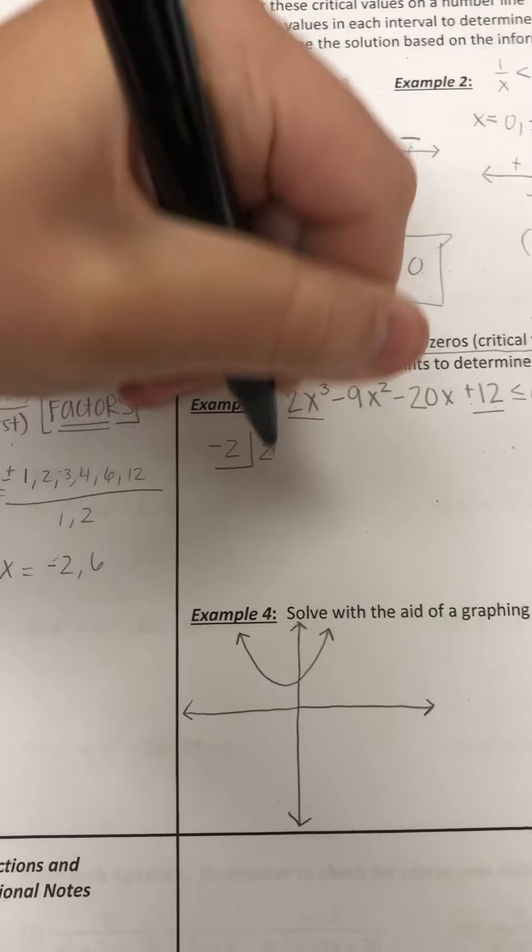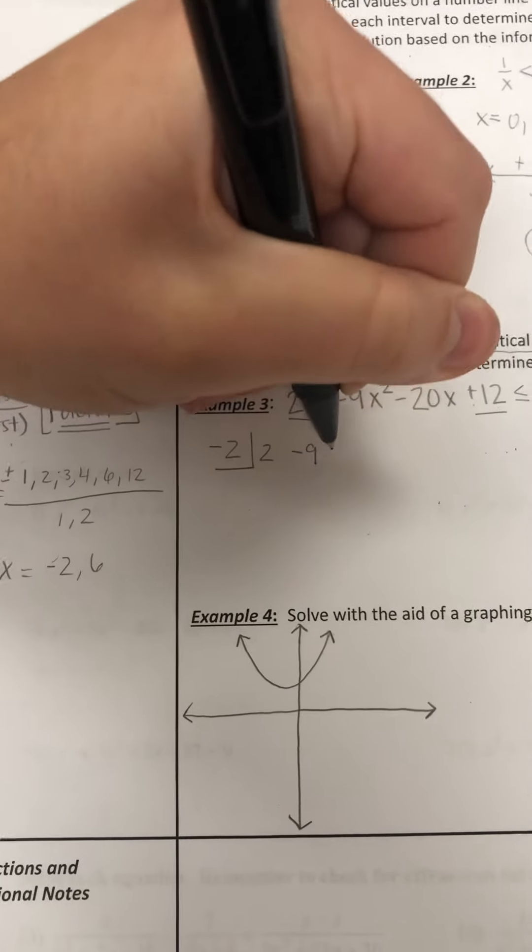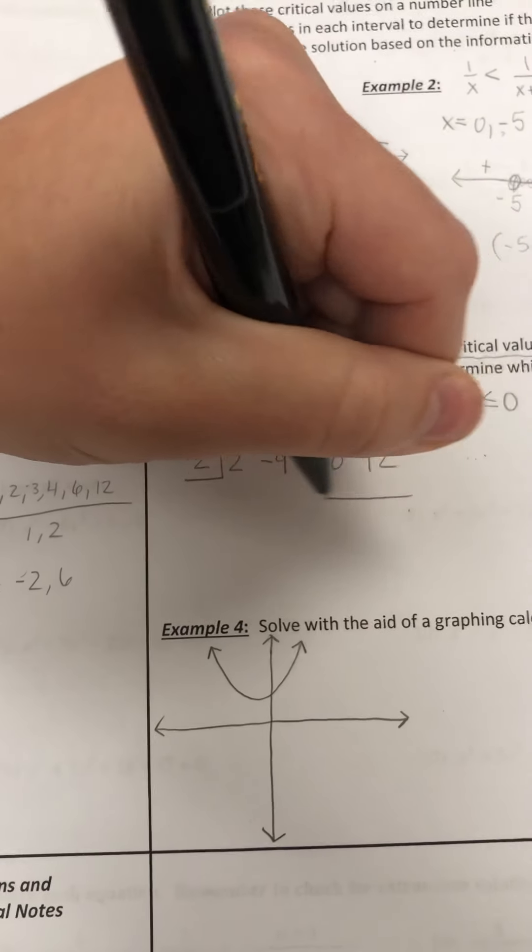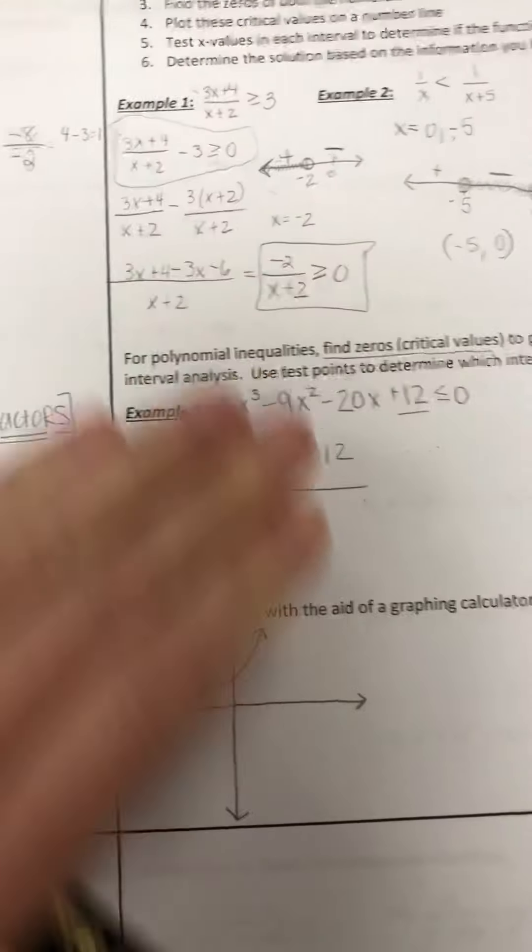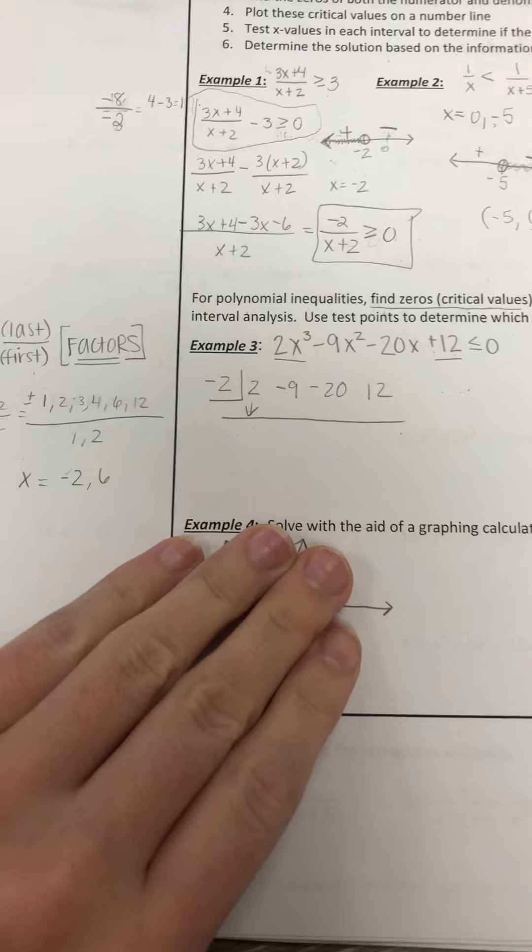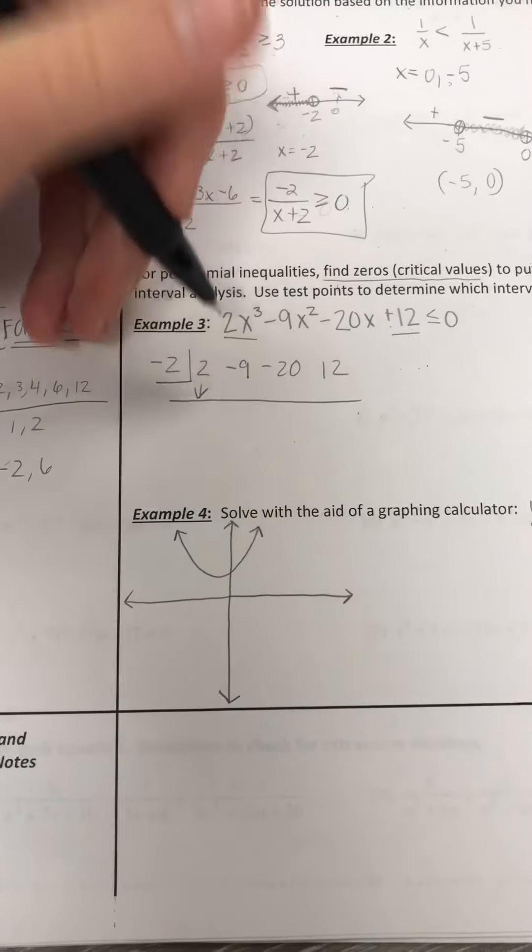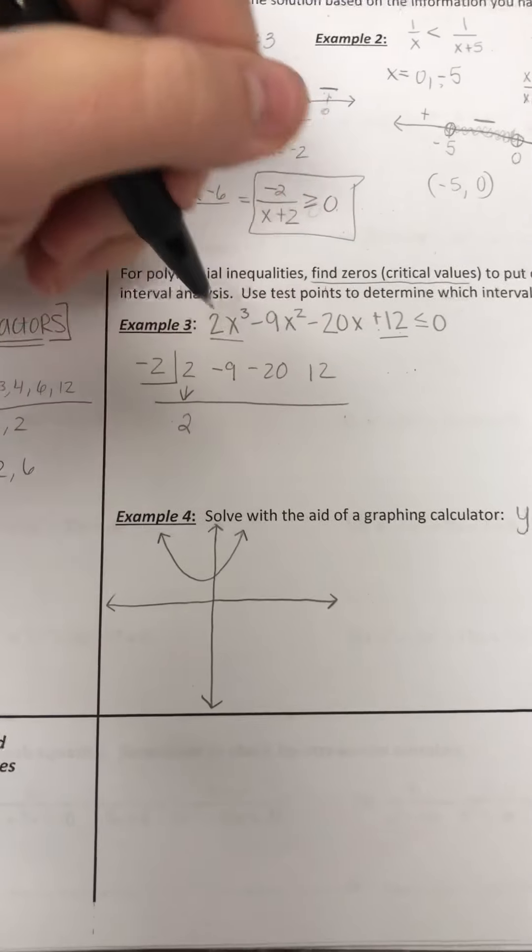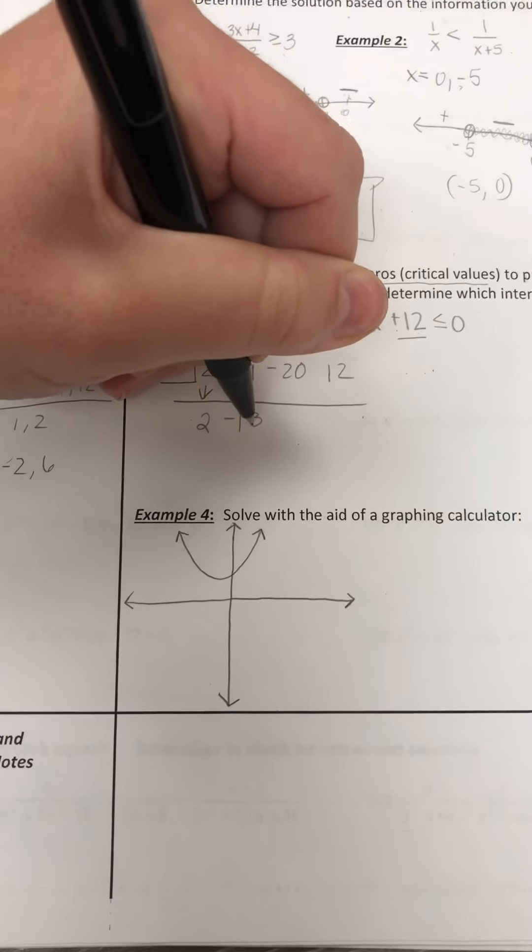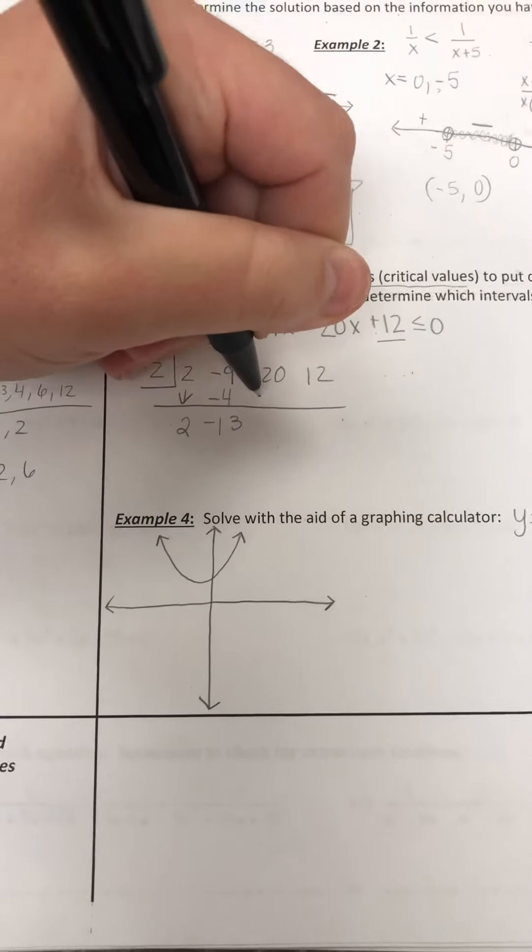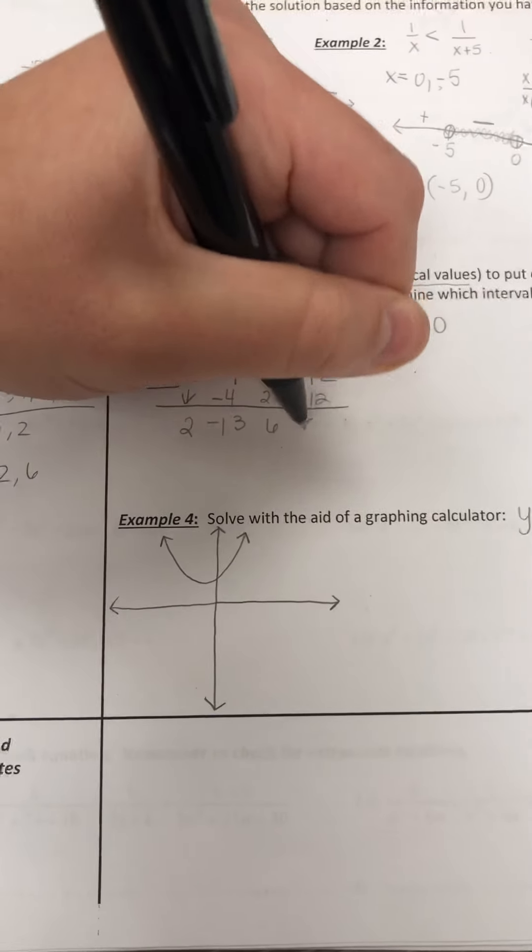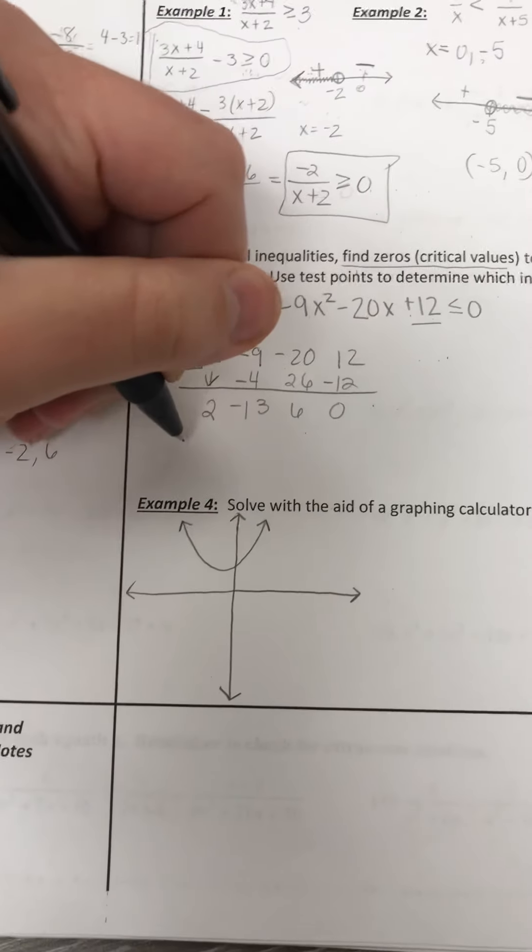You're going to do synthetic division. I've got 2, negative 9, negative 20, and positive 12. Some of them will not give you a nice factor when you divide using synthetic division, but most of the time, you will. So we pull that 2 down. We've got negative 4, which gives me negative 13, times negative 2 gives me 26, positive 6 times negative 2 is negative 12, and we're left with 0. So that's a really nice one.